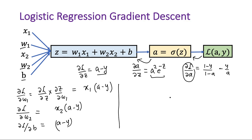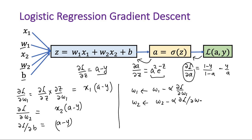For one gradient descent step with respect to a single training example, we update: w1 = w1 minus alpha times del L over del w1, substituting the gradient value. Similarly, w2 = w2 minus alpha times del L over del w2, and b = b minus alpha times del L over del b. This is just one step of gradient descent, and this same update happens in every iteration.